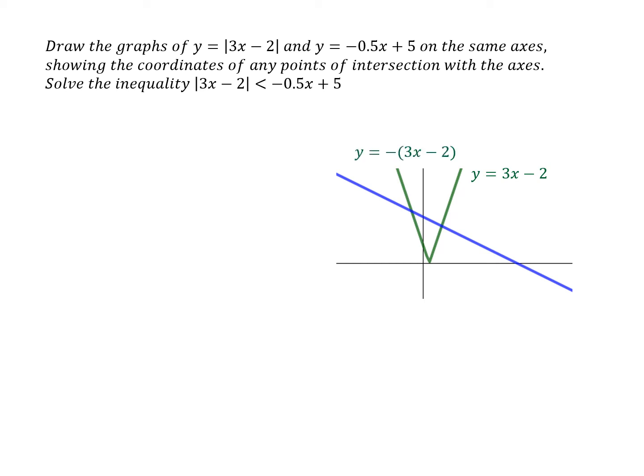and the other half is minus 3x minus 2. The linear graph is y equals minus 0.5x plus 5. So to find these two points of intersection, I need to solve a couple of pairs of simultaneous equations.